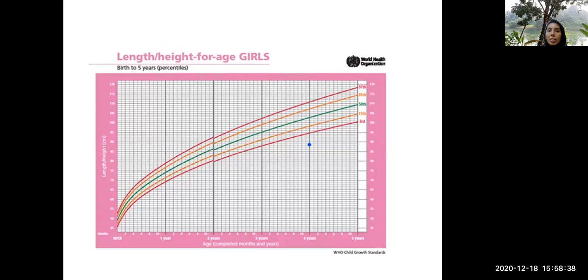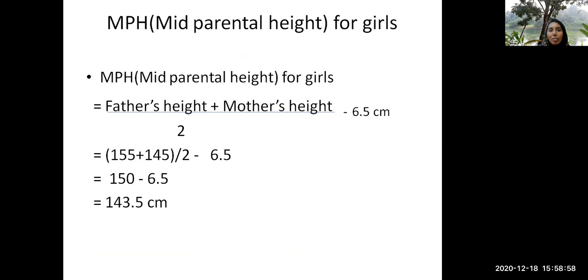This shows that the child's height is less than the third percentile. So now you know the child is having short stature because short stature means height expected for age is less than the third percentile for the age and sex of the child. So this is definitely short stature. But now we have some more clues to get a specific diagnosis.